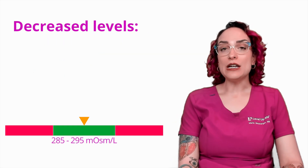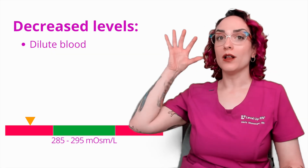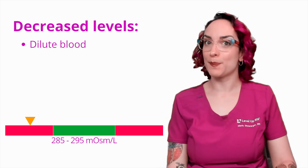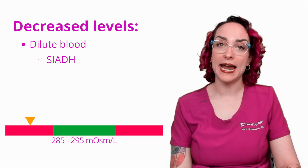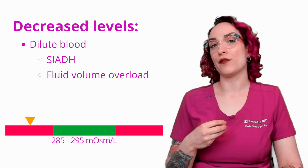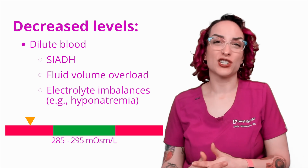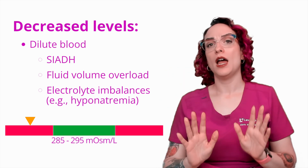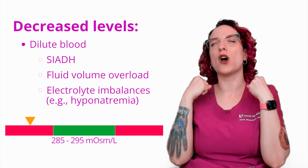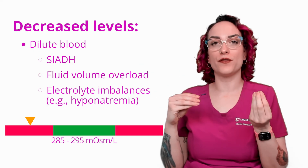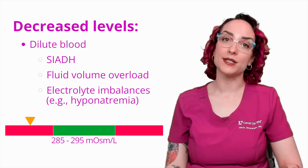When we talk about decreased serum osmolality, this is dilute blood — we have more liquid than stuff, or fewer particles than expected. Some possible causes are going to be SIADH, overhydration or fluid volume overload, and some different types of electrolyte imbalances such as hyponatremia. With SIADH or fluid volume overload, I've got too much fluid — I'm holding on to a lot of fluid. So even though I've got the normal stuff dissolved in the blood, the extra fluid dilutes it down, giving me a decreased serum osmolality.